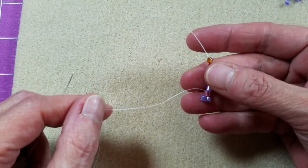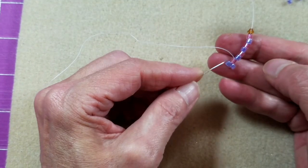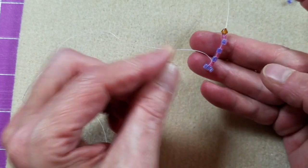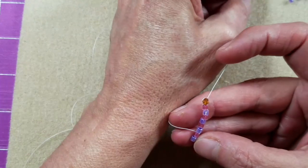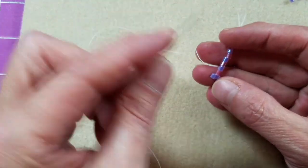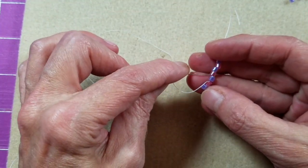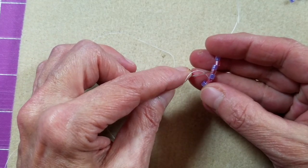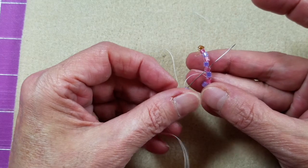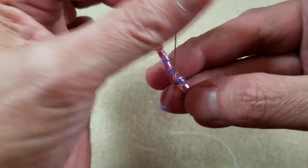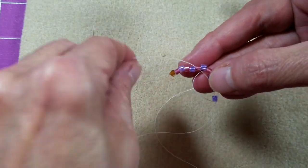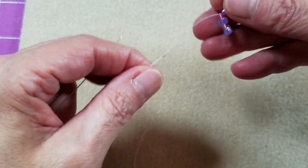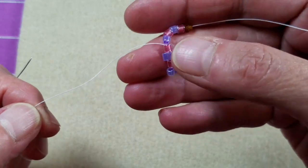Now I'm coming out of this pink bead but I want a purple bead to sit beside this next purple bead, so I'm going to pick up a purple bead and pass through, skipping over the one that I picked up before. I'm going to go through the next one which is the pink one right here. I'm going to pull that into position and as you can see it sits nicely right beside the purple one.